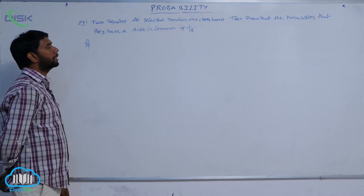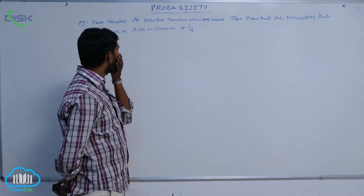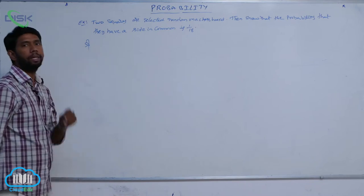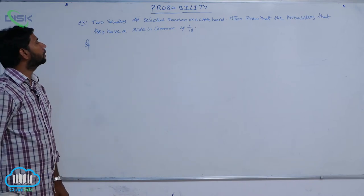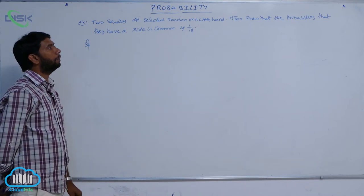Two squares are selected randomly on a chessboard. Show that the probability that they have a side in common is 1 by 18.